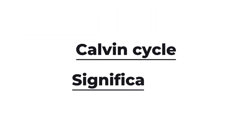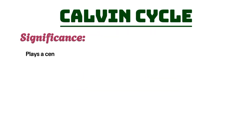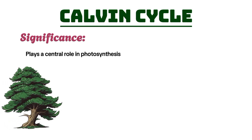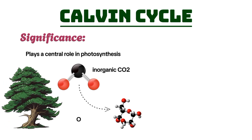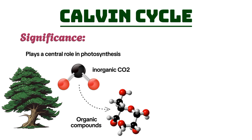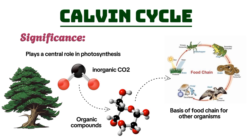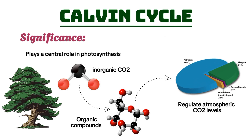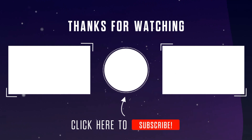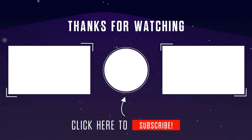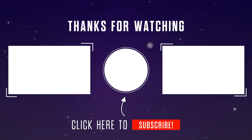The significance of the Calvin Cycle cannot be overstated. It plays a central role in photosynthesis, allowing plants to convert inorganic carbon dioxide into organic compounds essential for life on Earth. The sugars produced not only serve as energy sources for plants, but also form the basis of the food chain for other organisms, including humans. Additionally, the cycle helps regulate atmospheric carbon dioxide levels, making it vital for maintaining the planet's climate balance. Thank you for joining us in this exploration of the Calvin Cycle. Be sure to subscribe to Bioscholar for more engaging insights into the fascinating world of biology.